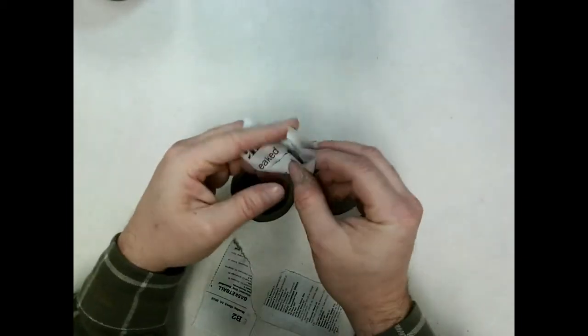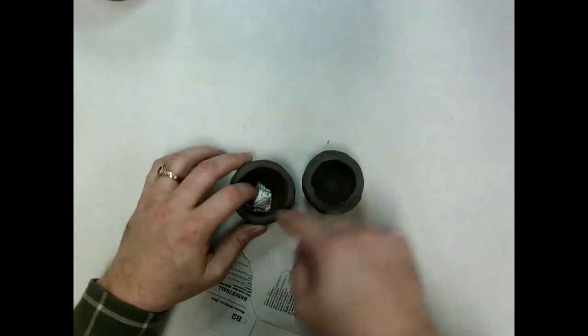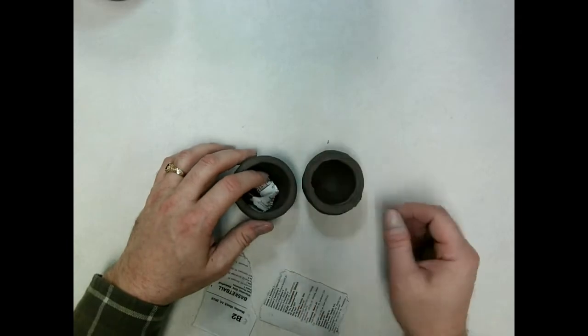You put it inside a piece of newspaper and just kind of wrap it around there. The reason we do that is we don't want it to stick to the side of the little clay pinch pot.